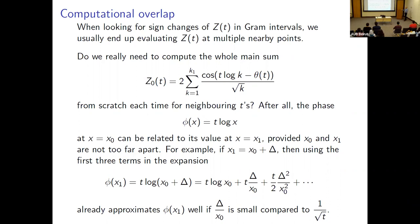On the surface it seems you have to redo the whole thing each time. But consider the phase function: what makes the sum hard to compute is the cancellation caused by the phase φ(k) = t·log k, which moves you around the unit circle unpredictably. However, if you look at the phase at x₀ and at a nearby point x₁ = x₀ + δ, using a Taylor expansion of the logarithm you get a good approximation for the phase at x₁ from its value at x₀, provided δ/x₀ is small compared to 1/√t.